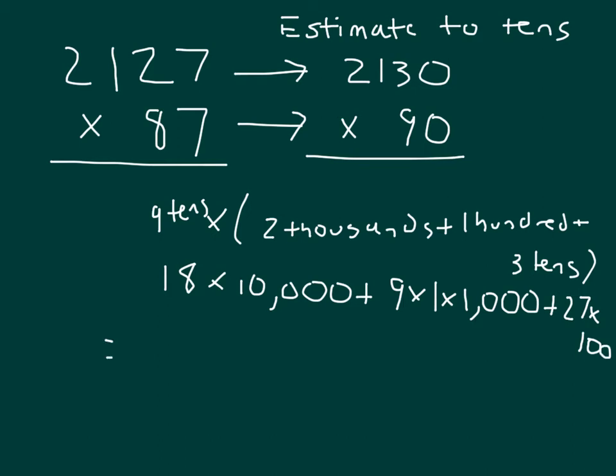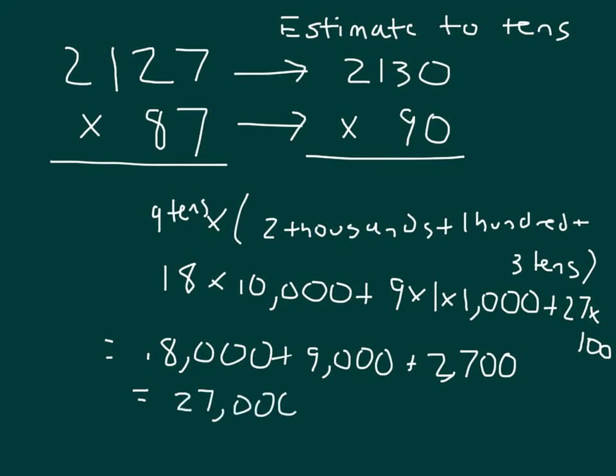Which equals 18,000, plus 9,000, plus 2,700, which is 2,700. Our answer is 27,000 plus 2,700, which does equal 29,700. And that answer, of course, is our estimated product, and that's our estimate for 2,127 times 87.